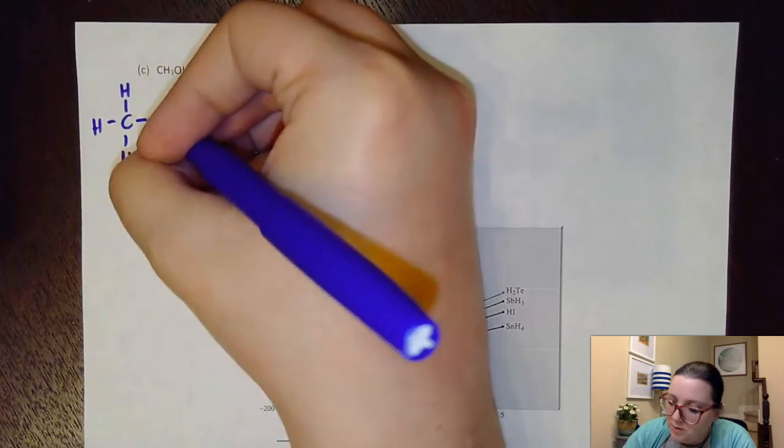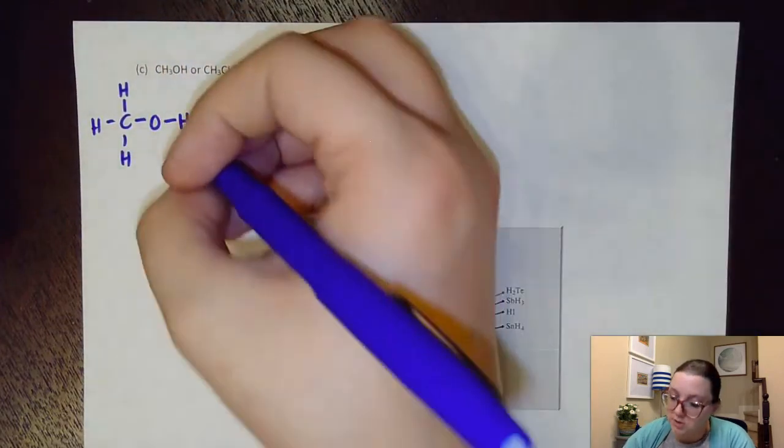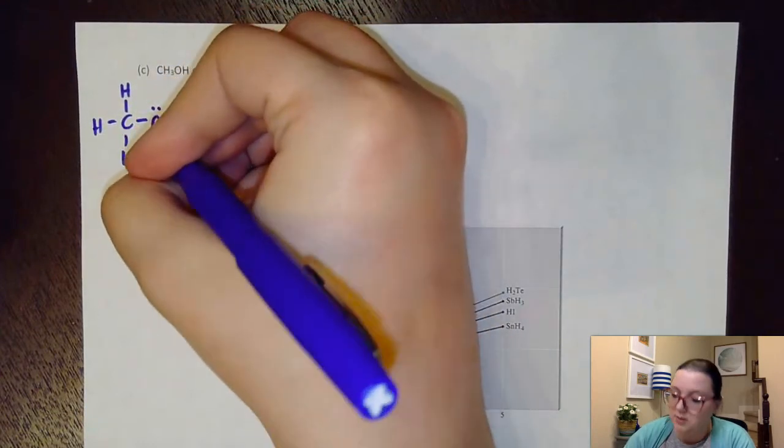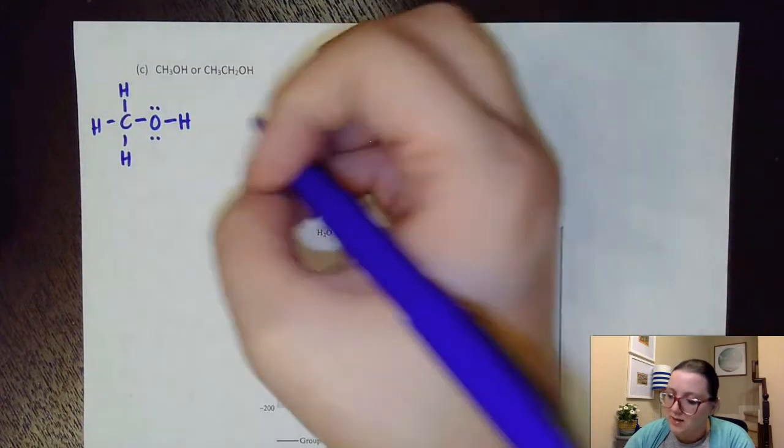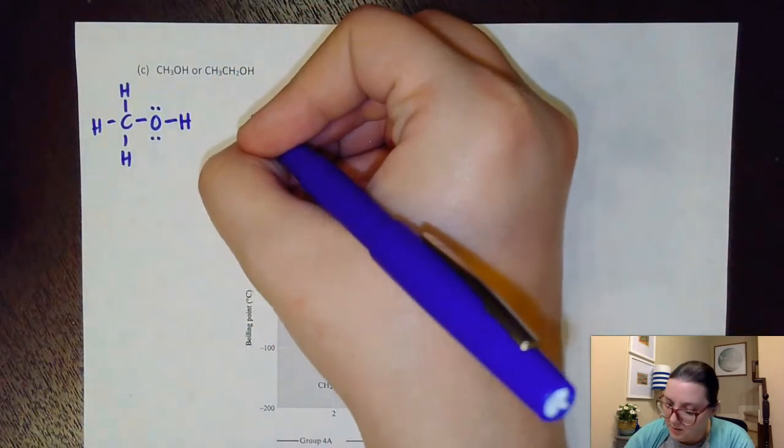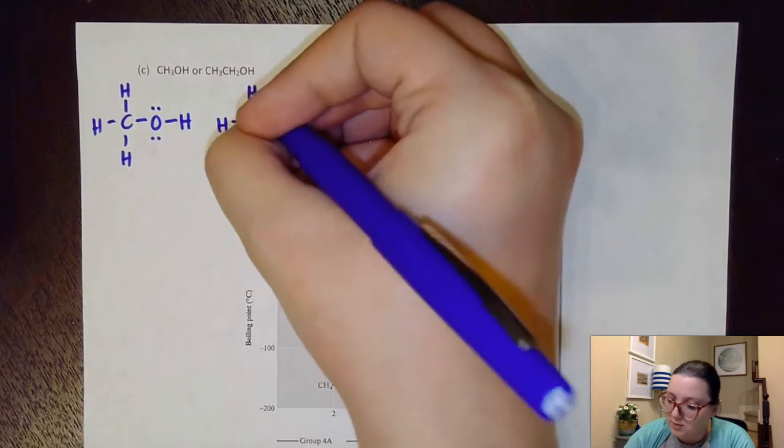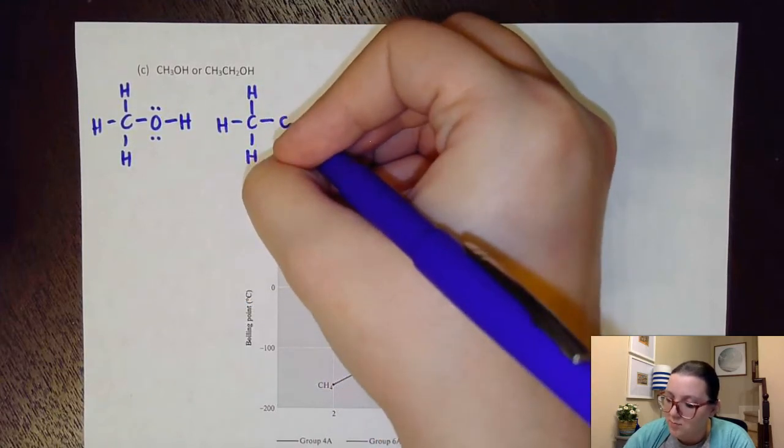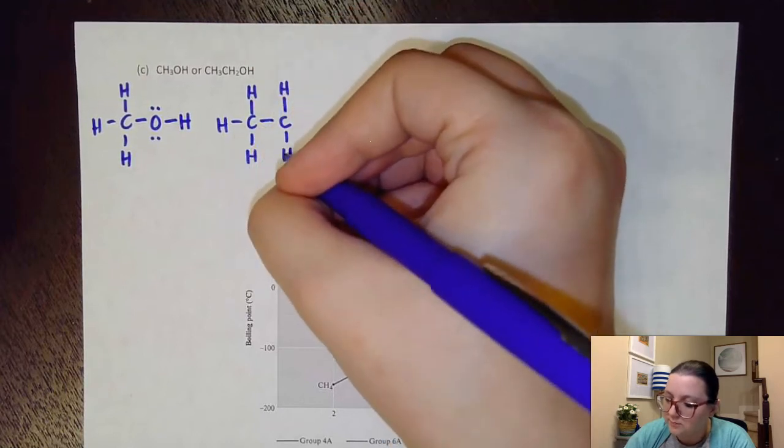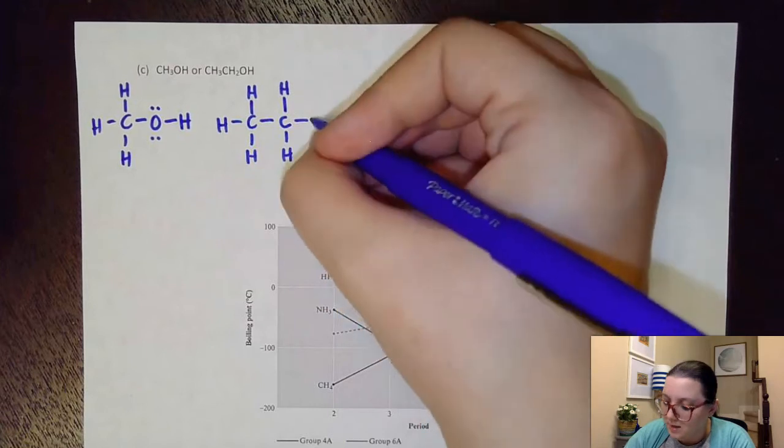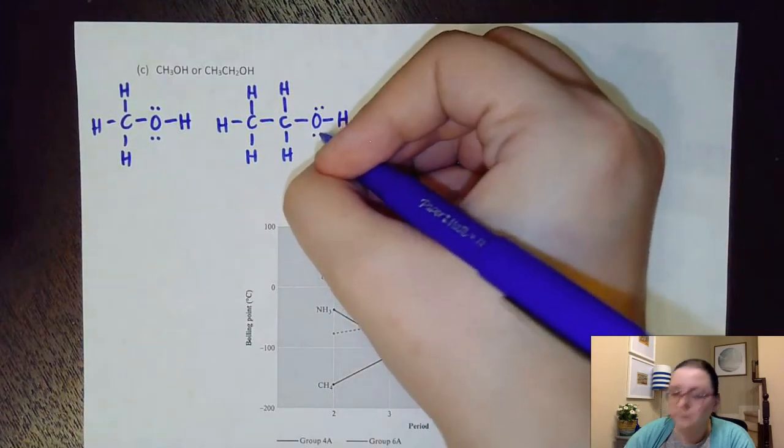CH3OH, that would be a carbon bonded to three hydrogens, bonded to an oxygen, bonded to a hydrogen. Now as we know, oxygen likes to make two bonds with two unshared electron pairs, so I'm going to throw those on here. Now this one, the reason why it's listed in order like that is because I would have a carbon with my three hydrogens on it. So there's my CH3. That would then be bonded to a carbon with two hydrogens on it. And then that would be bonded to an OH, an alcohol group.